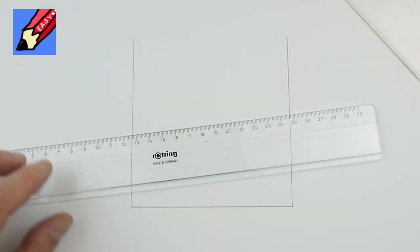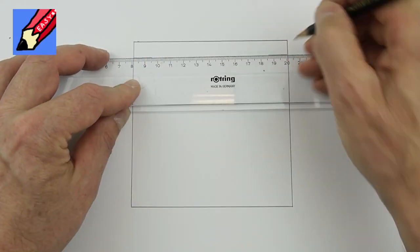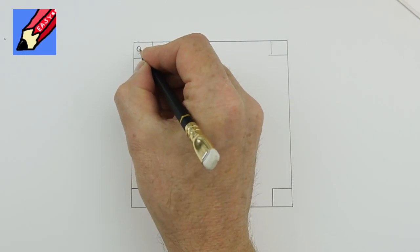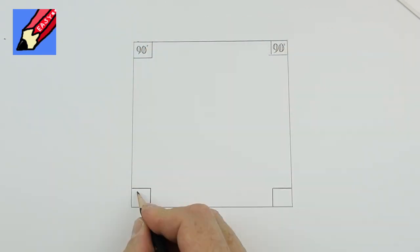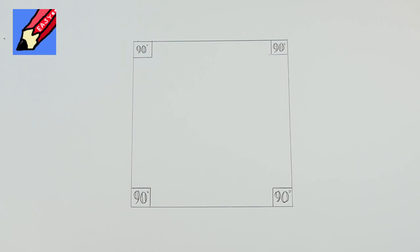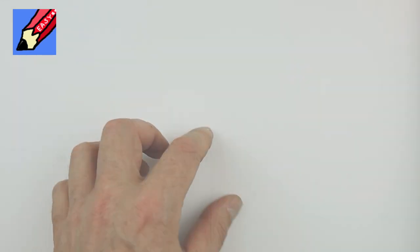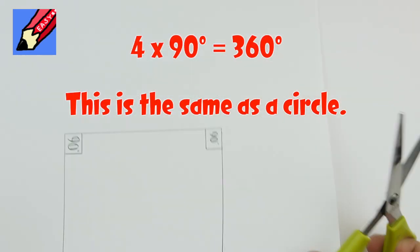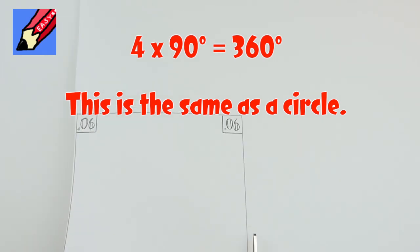Euclid drew a square and he wrote 90 in each corner. You will remember, he said, that a square has four corners. Now, each corner is a right angle and a right angle is 90 degrees. 4 times 90 adds up to 360 degrees,